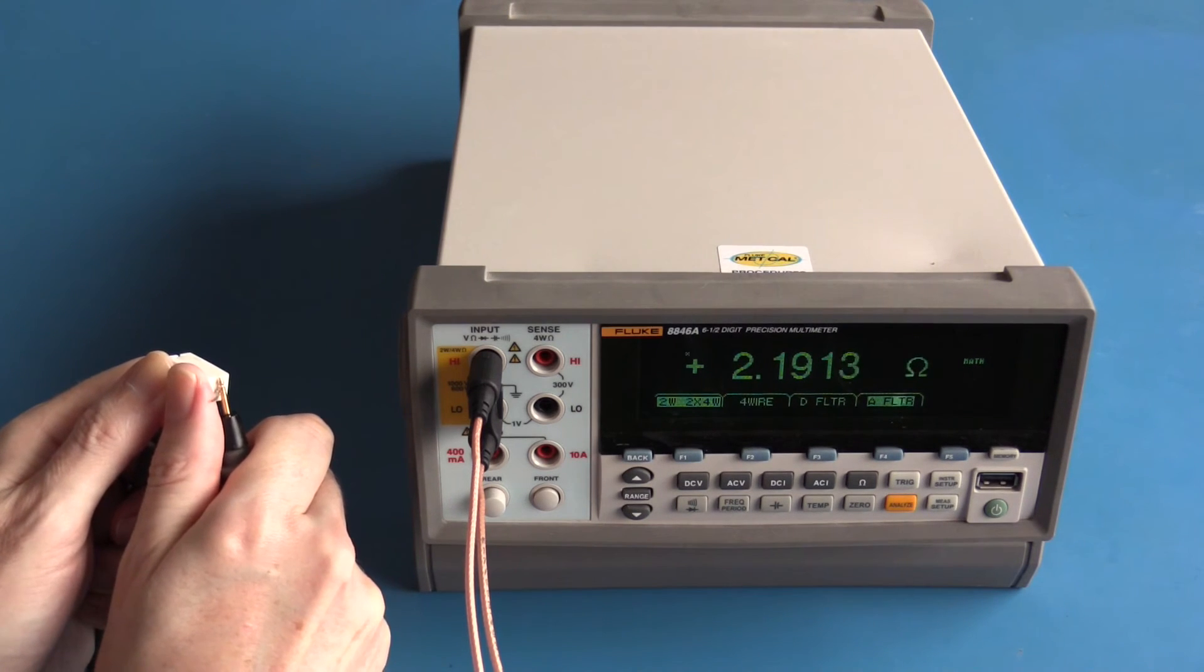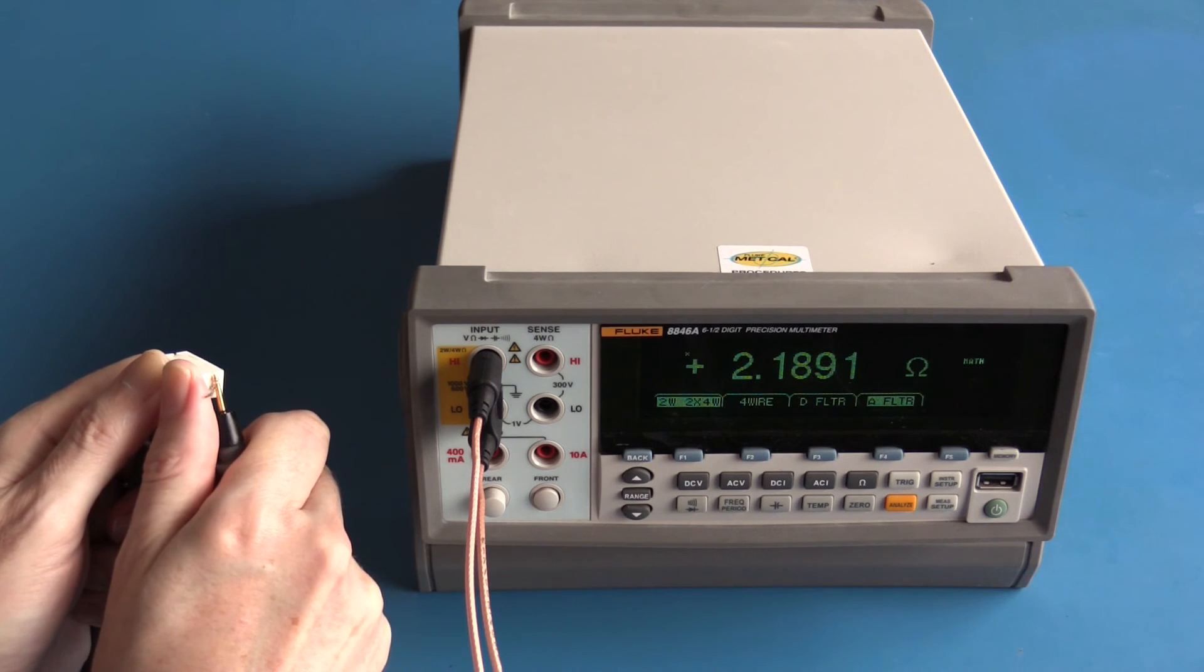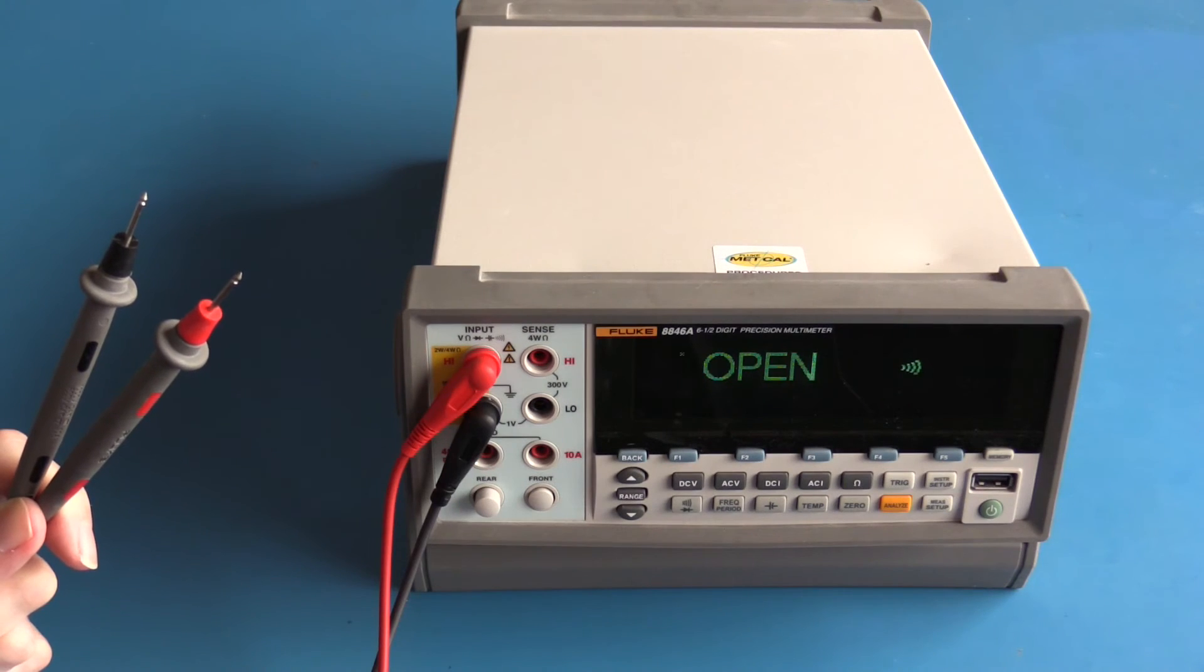Finally at my preferred resolution of five and a half digits, about 2.18, 2.19 ohms. I've now connected a typical set of test leads to the meter.